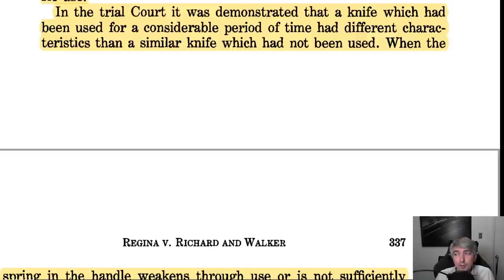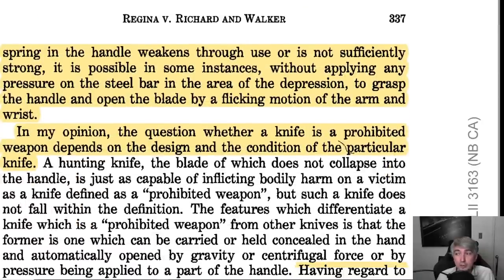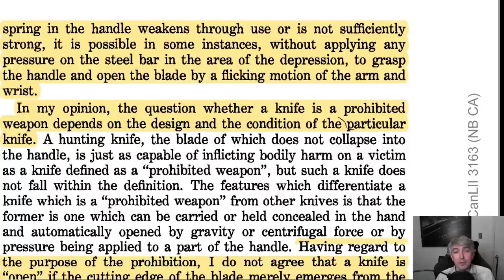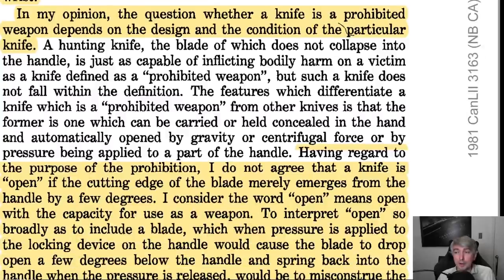At trial it was demonstrated that a knife used for a considerable period of time had different characteristics than a similar knife which had not been used. When the spring in the handle weakens through use or is not sufficiently strong, it is possible in some instances — without applying any pressure on the steel bar — to grasp the handle and open the blade by a flicking motion of the arm and wrist. As these knives get old, features intended to keep them from opening with a hand gesture can break down, and a knife can get loose and sloppy. That's something the court looks at.